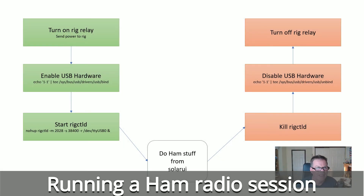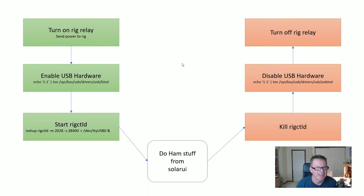Now we've got most of the pieces in place. The plan for running a ham session is: first turn on the rig using the relay — we've already got that. Then enable the USB hardware, start rigctld, do all the ham stuff, and then do the opposite to close out: kill rigctld, disable USB hardware to save power, and turn off the rig relay.